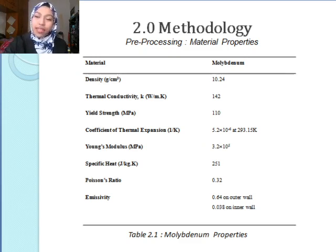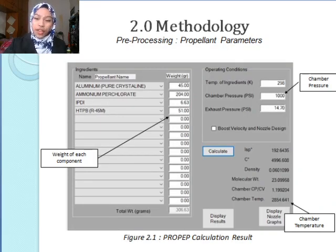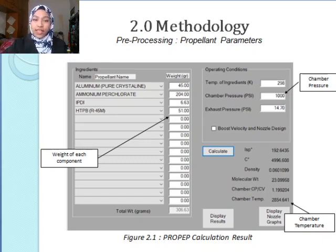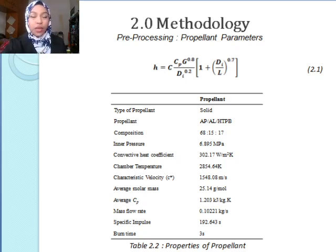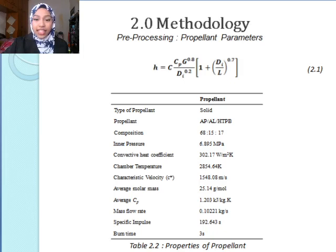Table 2.1 shows the molybdenum properties, which is used for the verification and also the results. Figure 2.1 shows the PROPEP calculation result — a software used to find out the chamber temperature — in which we use the propellant of APAL-HTPB solid propellant with a chamber pressure of 1000 psi. Table 2.2 shows the properties of the solid propellant of APAL-HTPB with a composition of 68-15-70. The heat exchange coefficient is computed from Equation 2.1, in which H is the heat exchange coefficient, C is a constant of 3.075, G is the mass velocity, and Cp is the specific heat of combustion mixture. There is a burn time of 3 seconds, given by the MTC Engineering engineers, and this propellant is chosen because it was their suggestion.